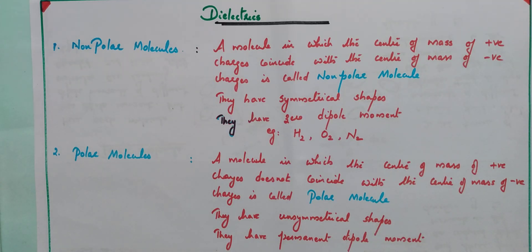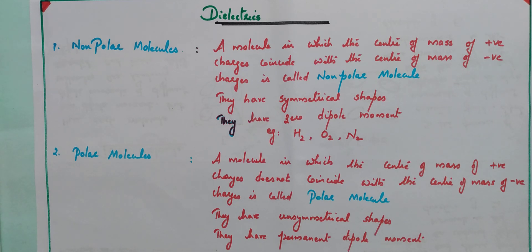As a continuation of dielectric and polarization, now we are going to deal with dielectrics. We know what dielectrics are — dielectrics are electrically non-conductive materials. Dielectrics are mainly classified into two types: non-polar molecules and polar molecules.